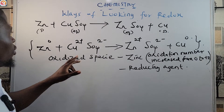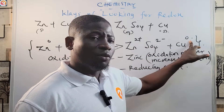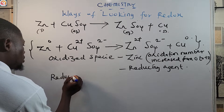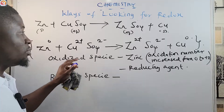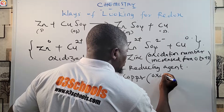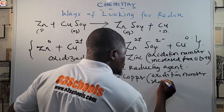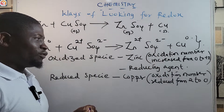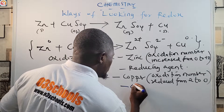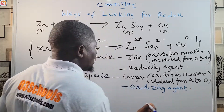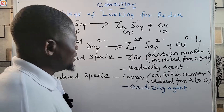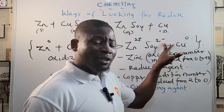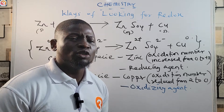Looking at copper: its oxidation number decreased from +2 to 0, so copper is the reduced species and therefore copper is the oxidizing agent.